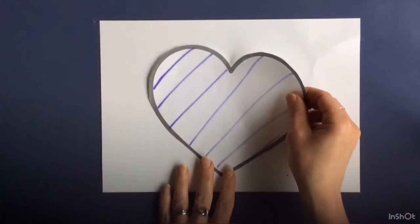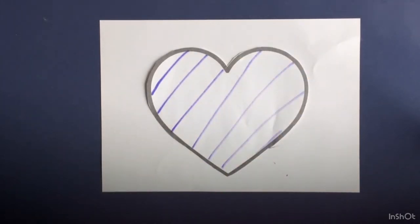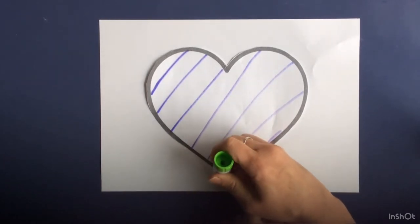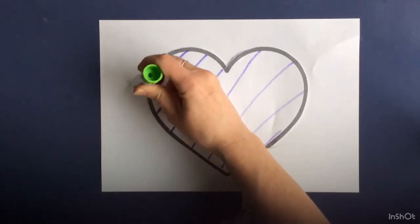First of all, place your colored heart on your blank piece of paper, and I'm going to use this to do the outside. So I'm going to put some glue around the outside just so I get the right shape.